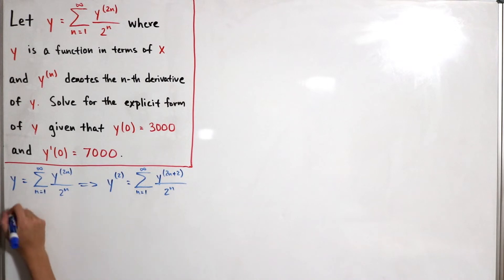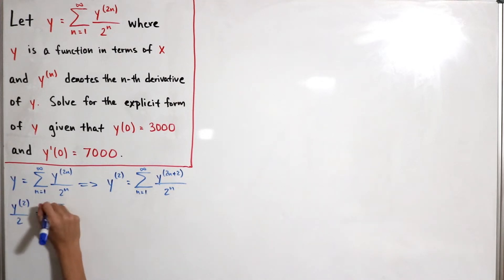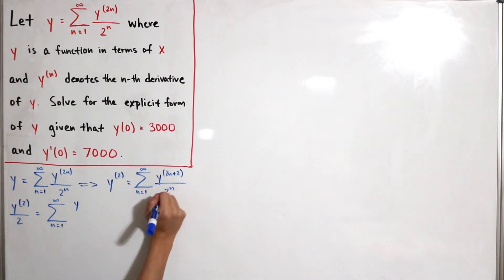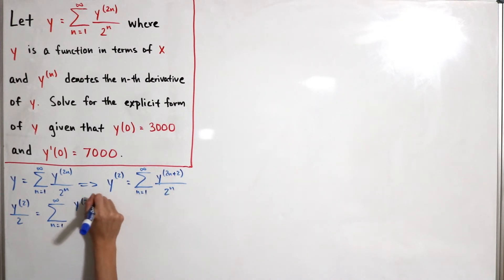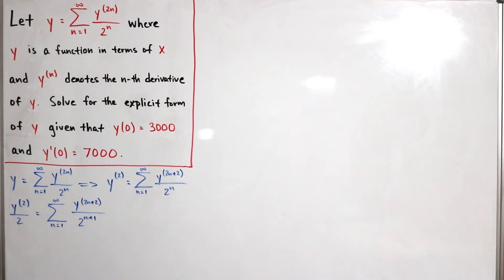Now we multiply both sides by one-half. So we get y''/2 on the left, and on the right the denominator becomes 2^(n+1), since multiplying by 1/2 adds one to the exponent of 2.